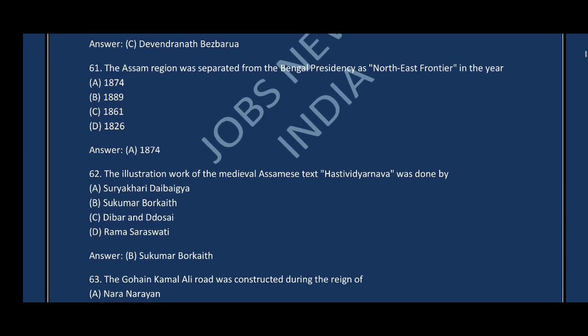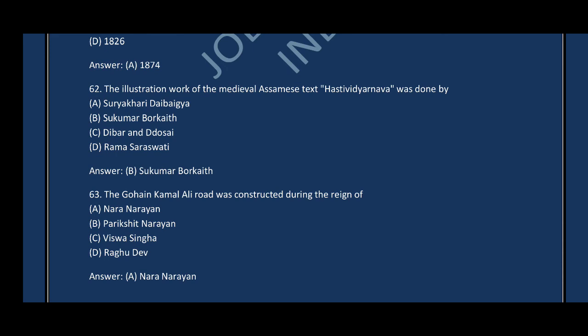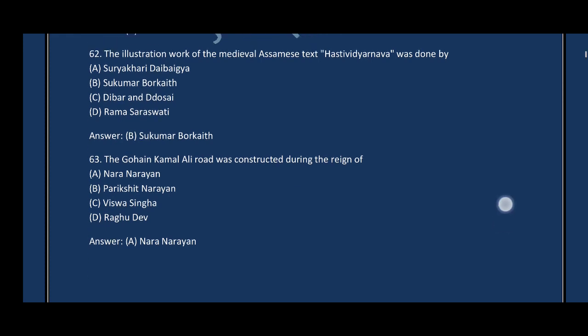Question number sixty-two: The illustration work of the medieval Assamese text Hastividyarnava Napa was done by — the correct answer is option B, Sukumar Barkaith. Question number sixty-three: The Gauhati-Kamal Ali road was constructed during the reign of — the correct answer is option A, Naranarayan.